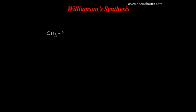What exactly are we going to study in Williamson synthesis? It is basically a reaction between a methyl bromide molecule — CH₃Br — and a respective alkoxide. For example, if I take NaOCH₂CH₃, that is sodium ethoxide. So it's a simple reaction between an alkyl halide and a sodium alkoxide.